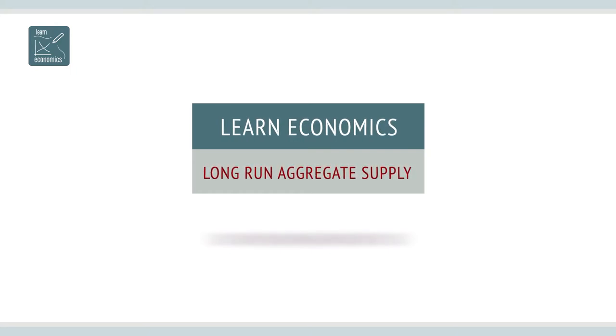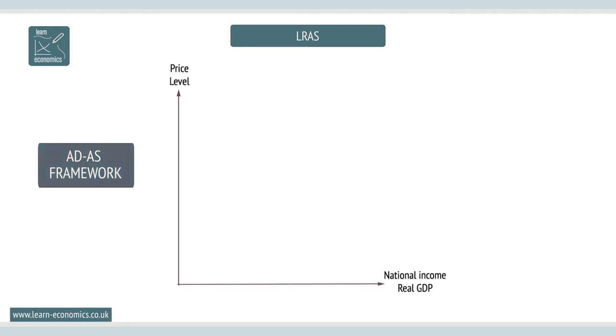The Long Run Aggregate Supply Curve, or LRAS Curve, is a vertical curve at the economy's current capacity, at YF.